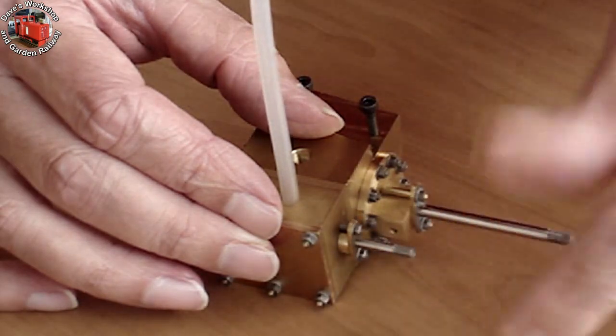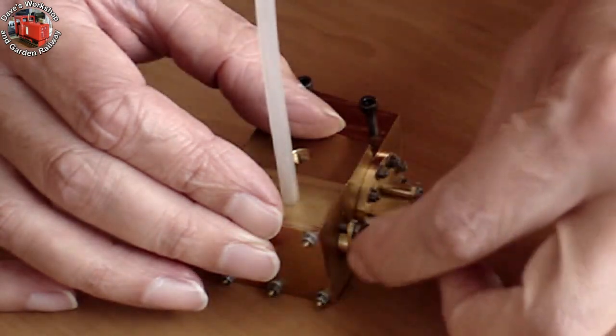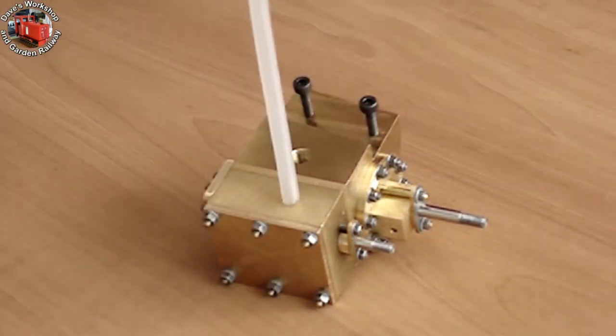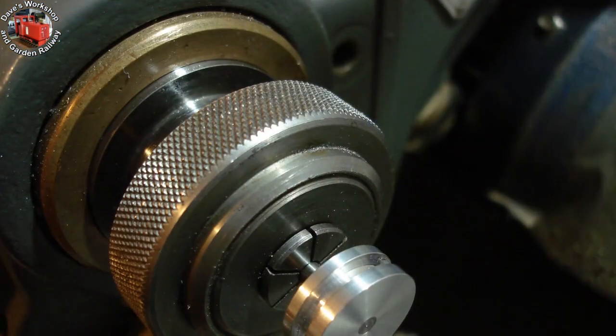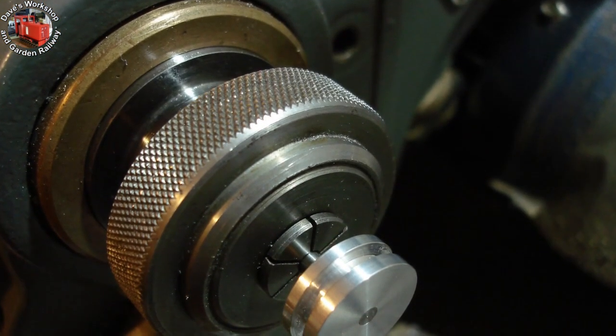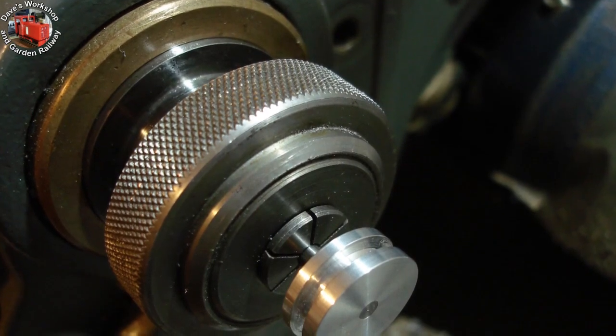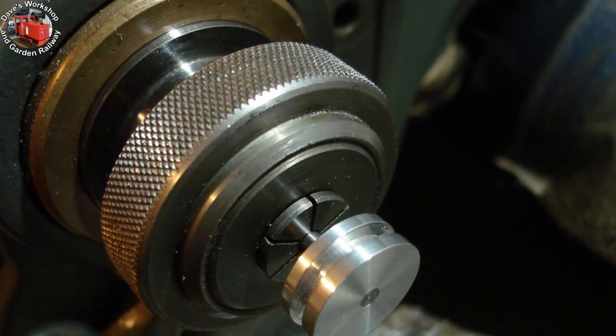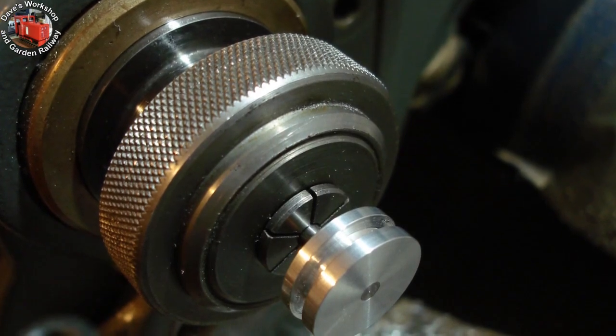I had some off cuts of aluminum alloy bar left over from the quarry Hunslet piston material so I used these for Chowels. They were short stubs so needed turning on the piston rods. The rods are 5/32 inch 304 grade stainless and threaded 5/32 by 40 TPI ME for about an eighth of an inch.